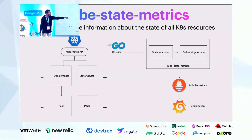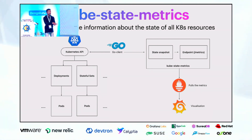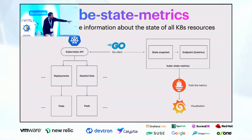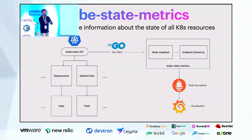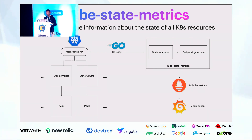Metrics are like raw vegetables, Prometheus is like a frying pan with spices and masalas, and Grafana is like a full meal plate in a five-star hotel — decorated and everything.